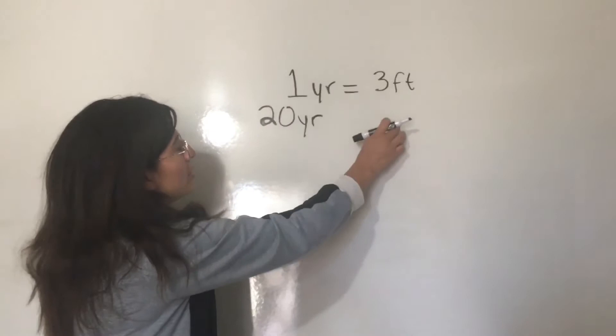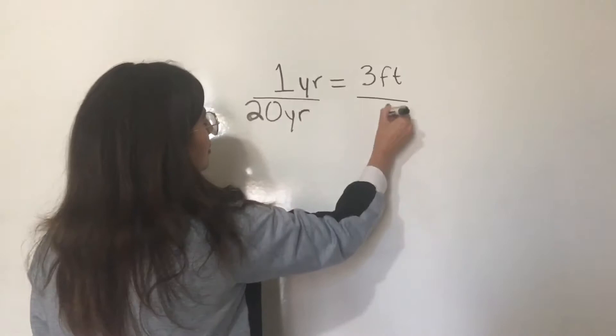So, 20 yards equals how many feet? Well, you can just set this up easily like this. And then this is our unknown. And you cross multiply.